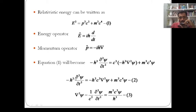So the Klein-Gordon equation can be written as: −ℏ² ∂²ψ/∂t² = −ℏ²c²∇²ψ + m²c⁴ψ.